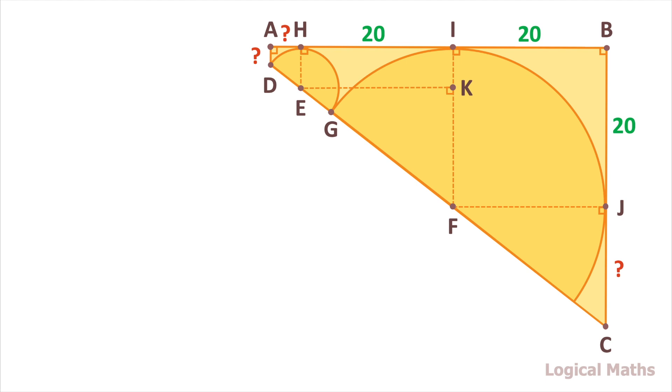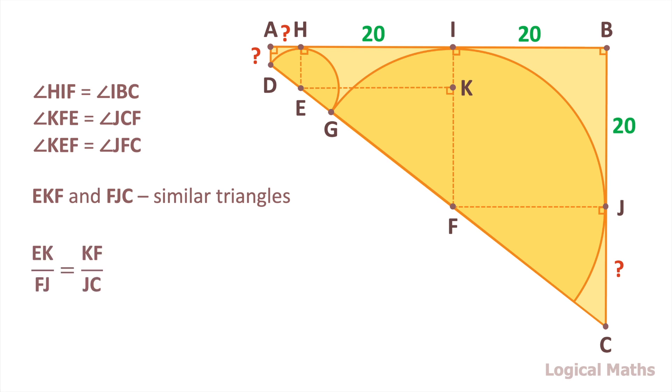In triangles EKF and FJC all corresponding angles are equal. So the triangles are similar. Therefore all corresponding sides have the same ratio. So we can make a proportion.